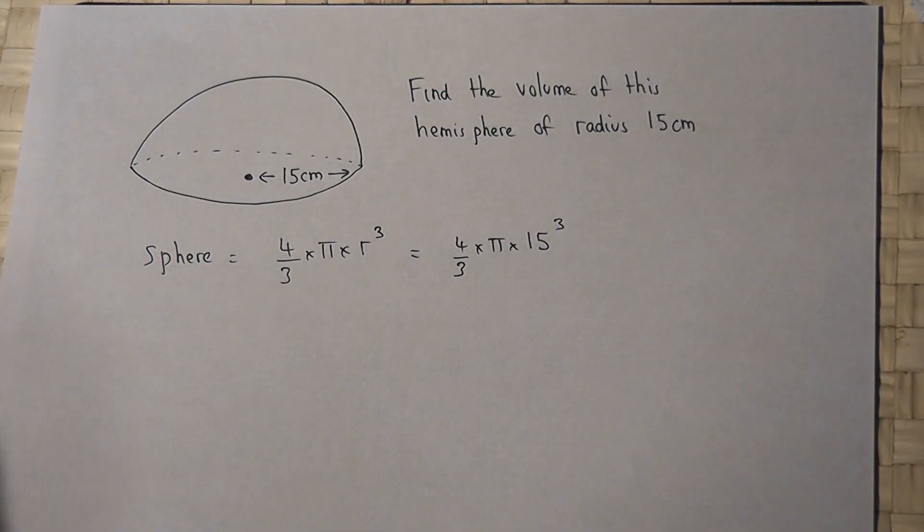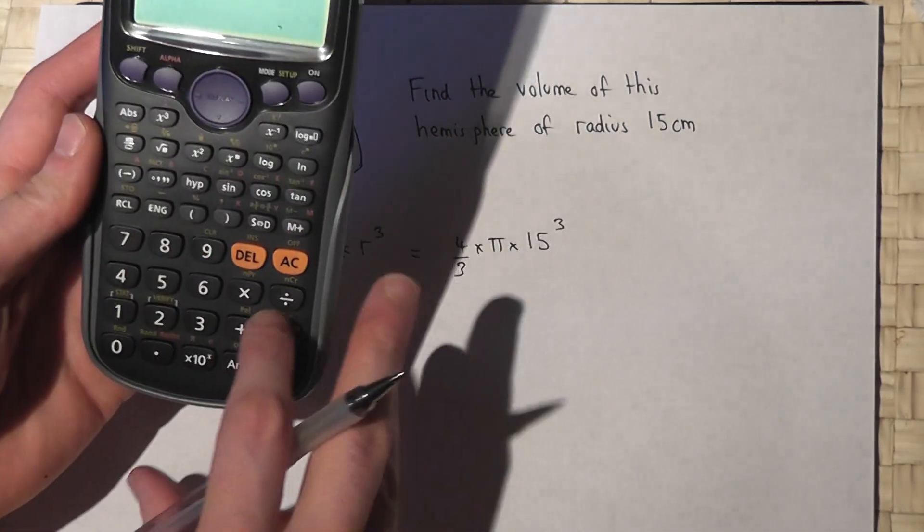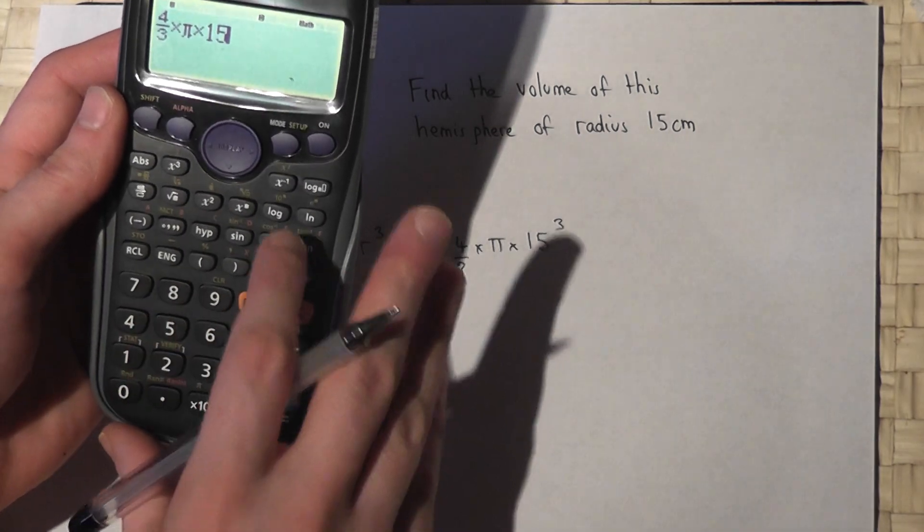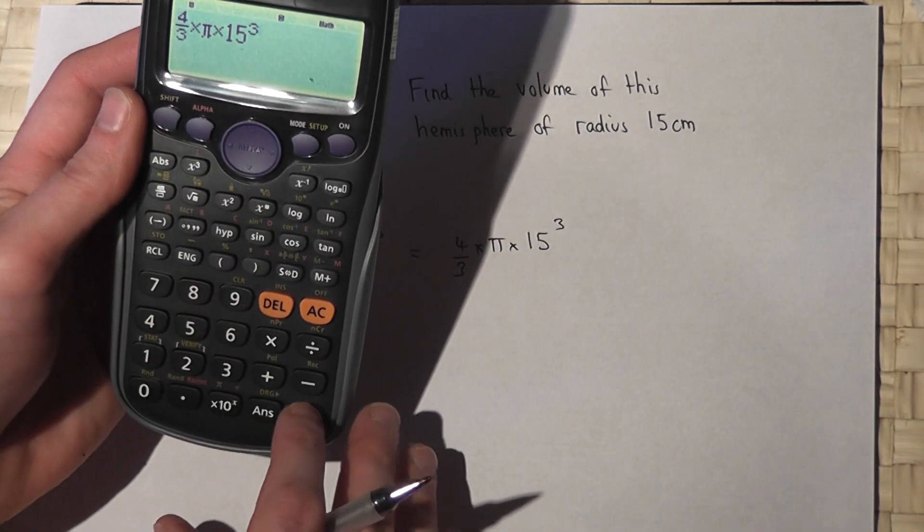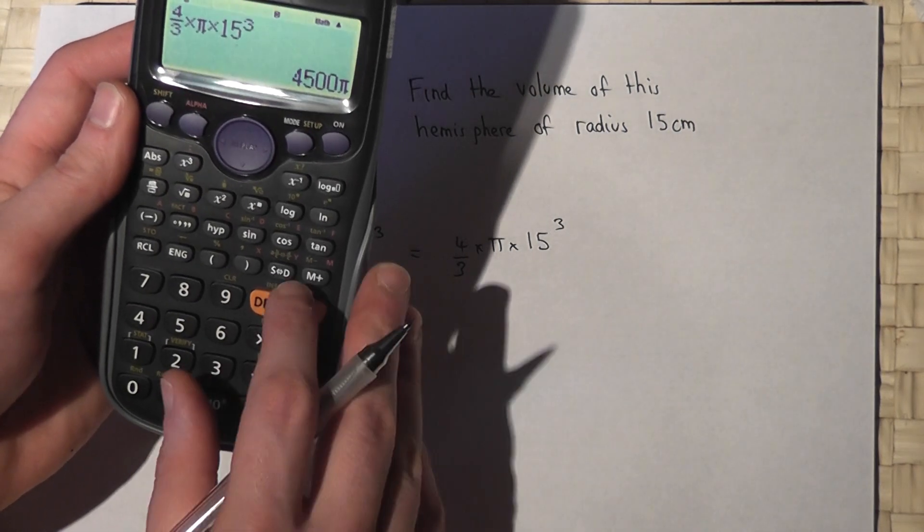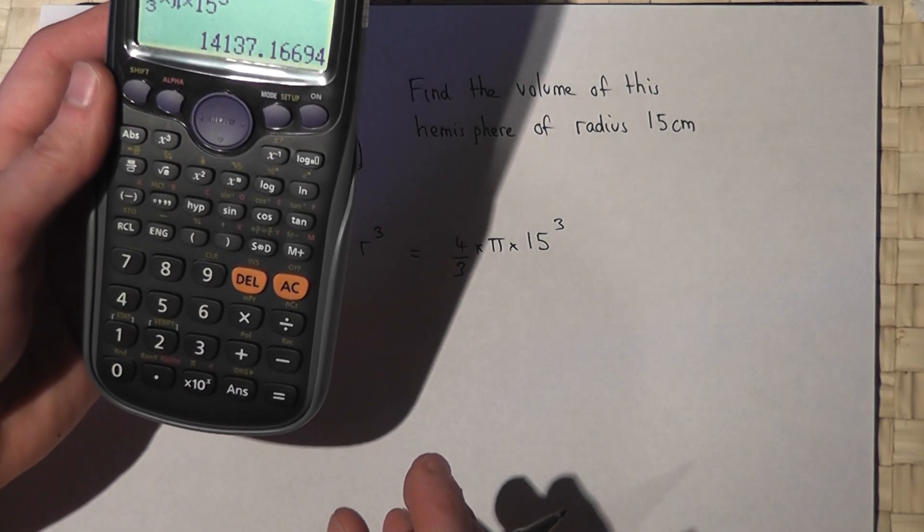So calculator: four thirds times pi times 15 to the power of 3. If I press enter I get 4,500 pi. The SD button, there we go, 14,137.